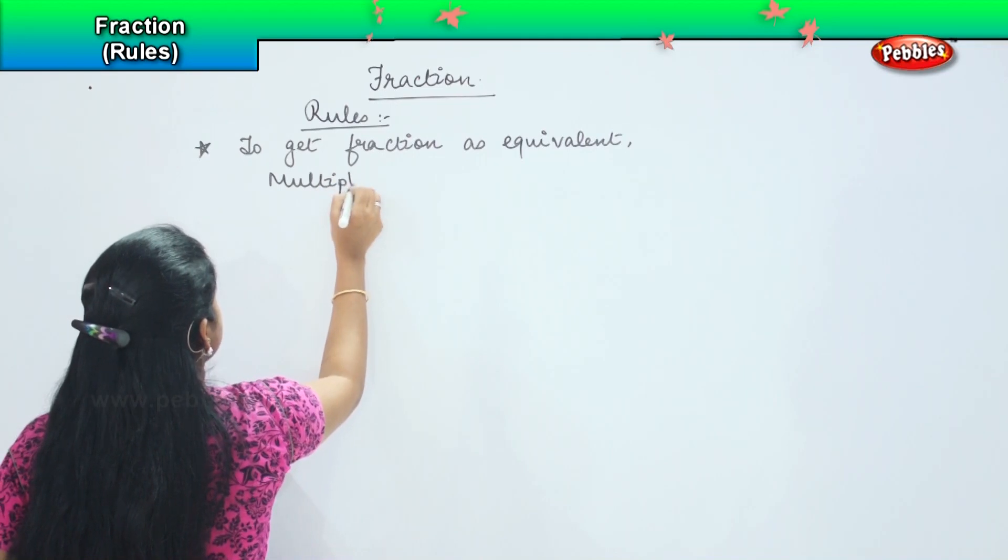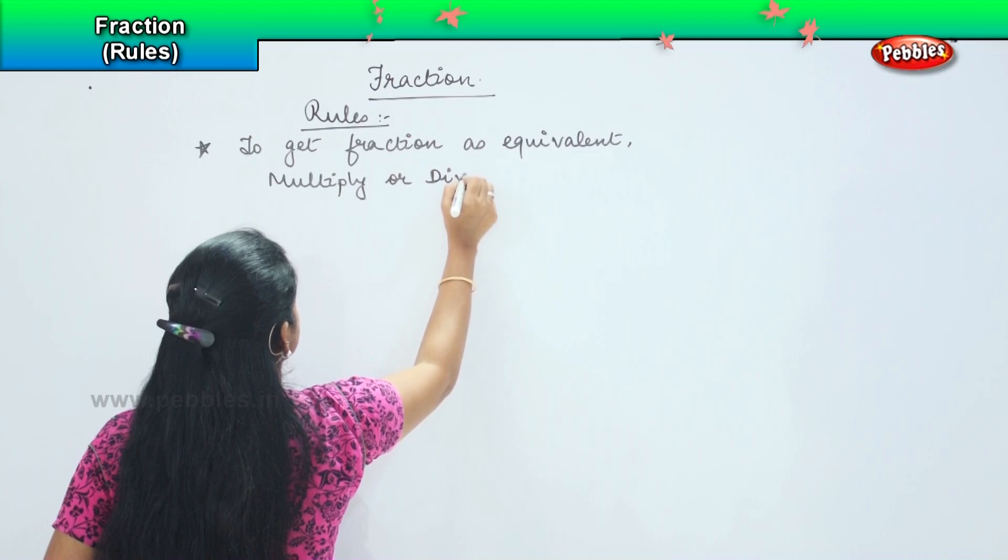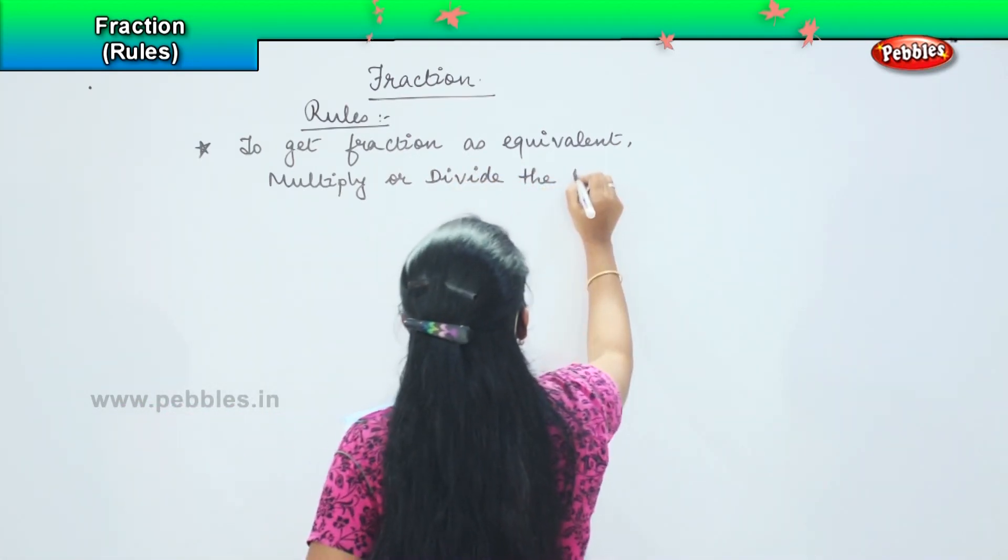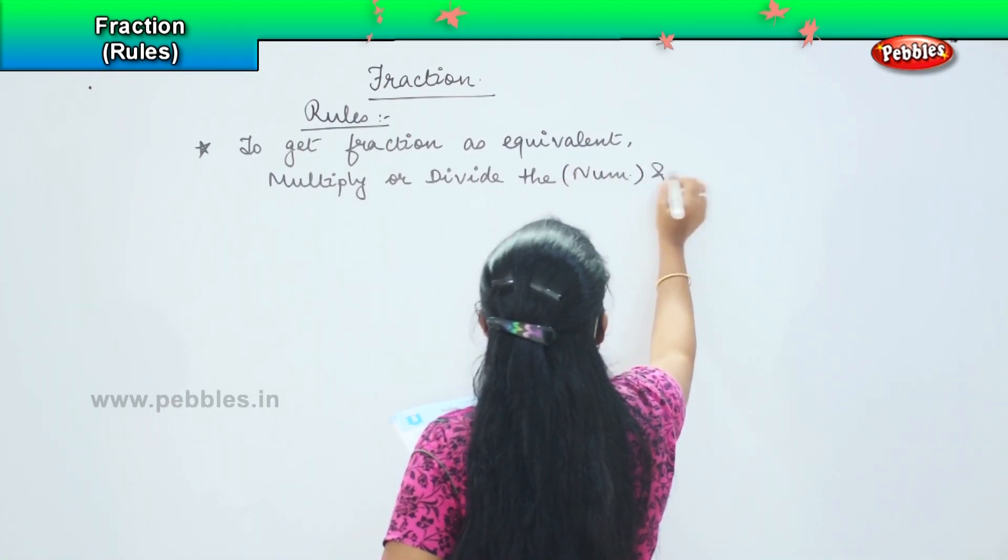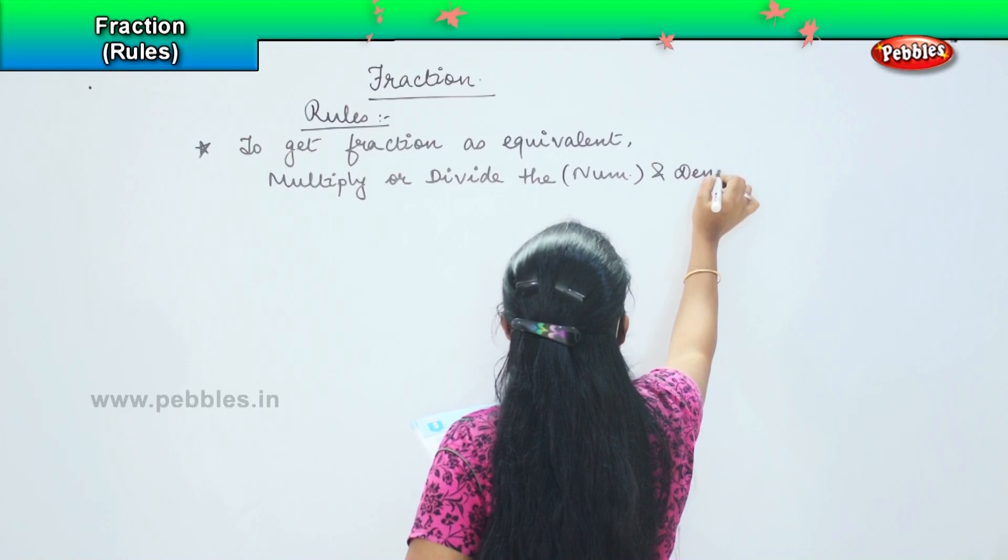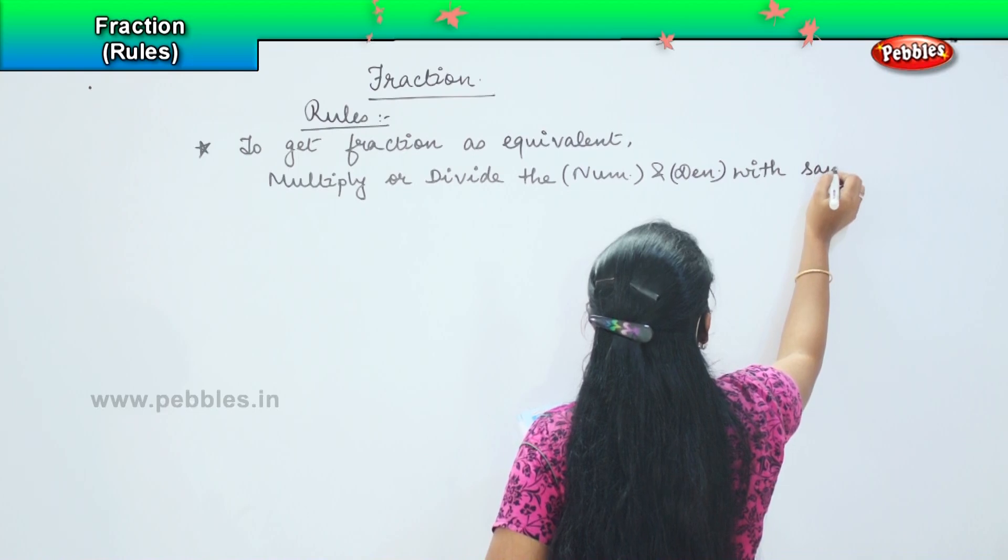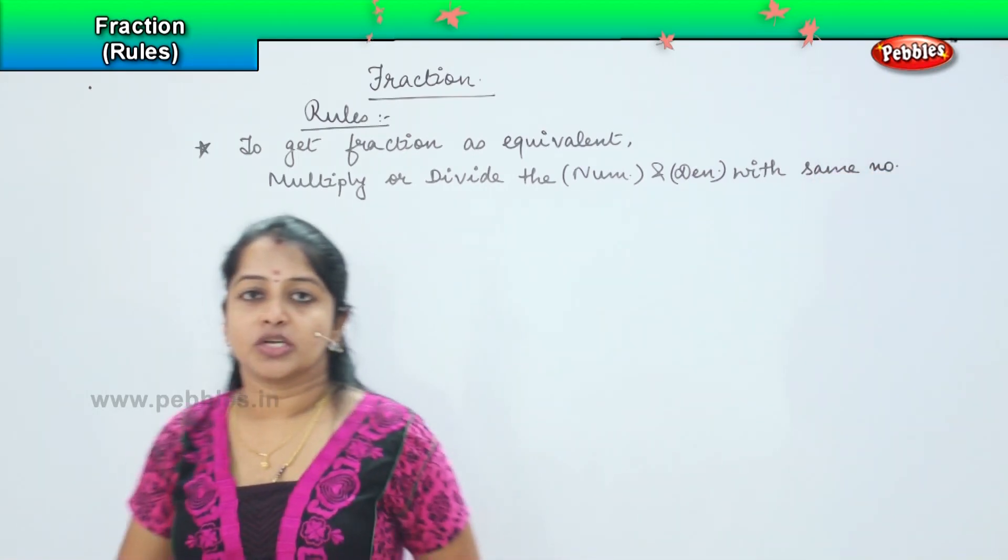Multiply or divide the numerator and denominator with same number. So what do you mean by this rule, children?